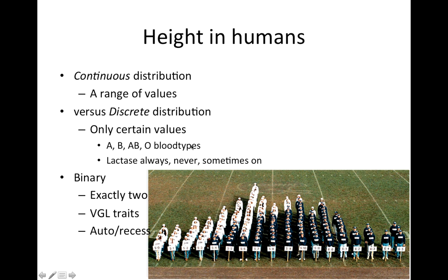A classic case of a trait that involves more than one gene is height in humans. Here we have a distribution of people lined up by height from five foot to six foot five, and it gives us this classic bell-shaped distribution. What we call these are continuous traits, where not only can you be five foot zero or five foot one, you can be five foot and 0.2 inches or 0.3 inches. You can be seven feet tall, you can be four feet tall, and you can be anywhere in between — a continuous distribution.